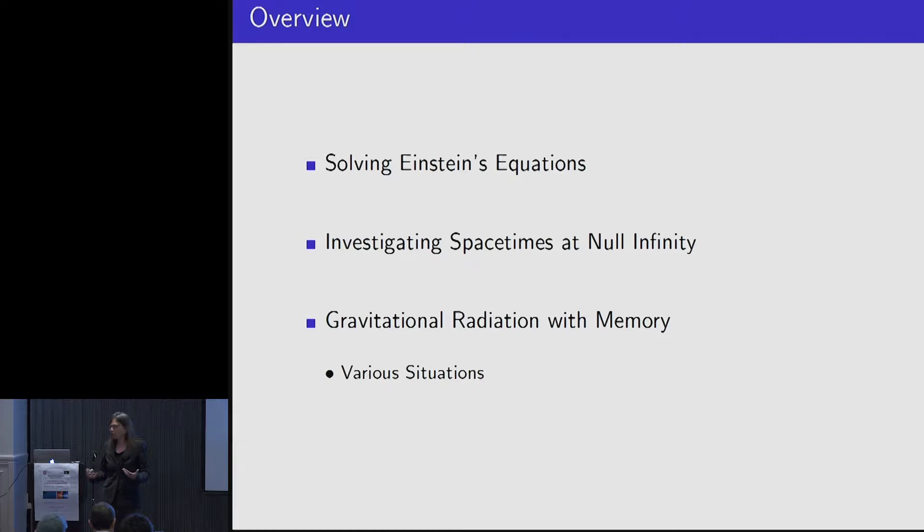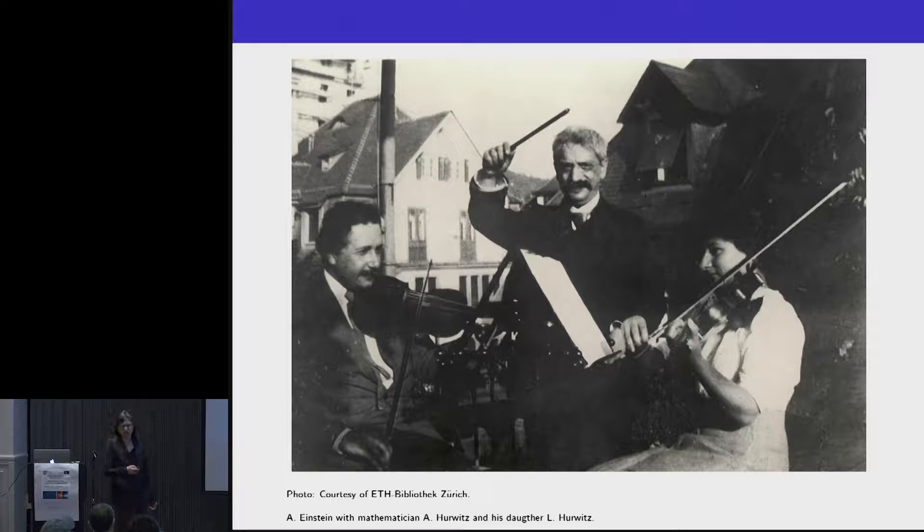We always solve the Einstein equations, or partially solve them, when we try to solve problems in general relativity. We are interested in spacetimes where we have gravitational radiation, and two typical scenarios are if you have isolated systems or close-by binary black hole mergers, so I can deal with that as an isolated system and look at asymptotically flat spacetimes. But if the source is very far away, then we are in a cosmological setting.